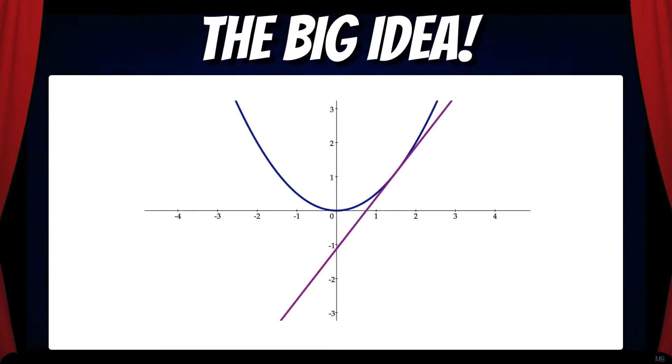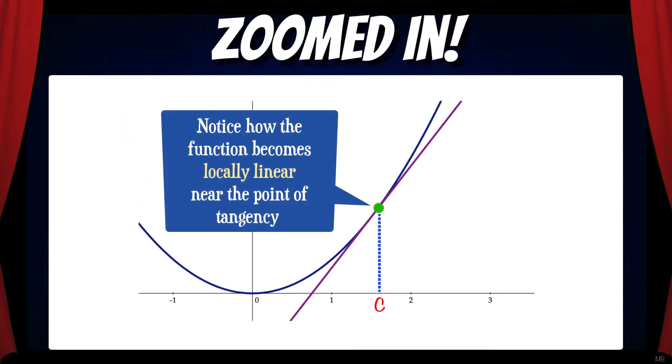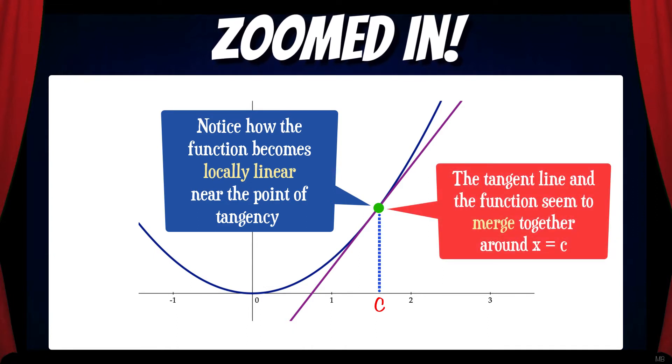Here's the big idea. Suppose we have a function and a tangent line at x equals c. When we zoom in, notice how the function becomes locally linear near the point of tangency. The tangent line and the function seem to merge together around x equals c.